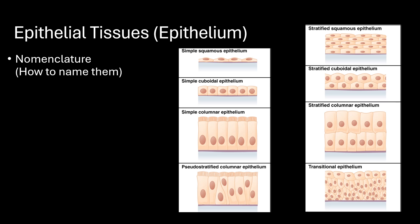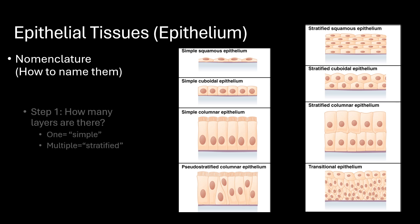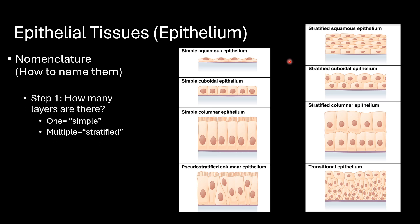So how do we name these epithelial tissues? The first step is to identify how many layers there are. If there's a single layer, we consider it simple — in these examples we have a single layer, so the first word is simple. Versus these examples where we can see there are multiple layers on top of the basement membrane, so the first word is stratified.